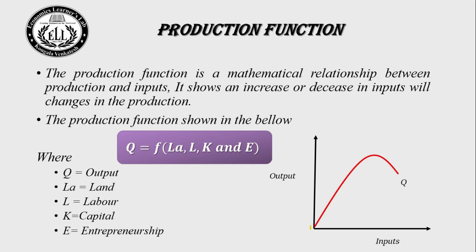The production function can also be seen in graphical form. On the horizontal axis we have inputs; on the vertical axis we have output. The Q curve shows that as inputs increase, output initially increases at an increasing rate, then at a decreasing rate, reaches a maximum, and eventually decreases.